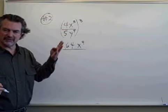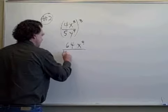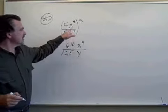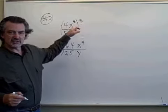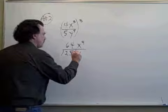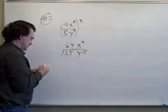5 times 5 is 25. 25 times 5 is 125. y to the fifth, being raised to the third power, power to a power, we multiply. That's y to the 15th.